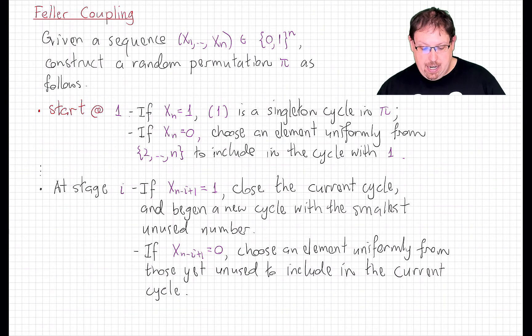If X_{n-1} is 1, then we stop and we have that single cycle, 1 in whatever element we chose before. And now for the next cycle, we choose whatever is the next lowest number that we haven't yet assigned, since that's where we usually start our cycles anyway, and proceed. And we keep going this way. At stage i, we look at, reading the sequence backwards, the value of X_{n-i+1}.